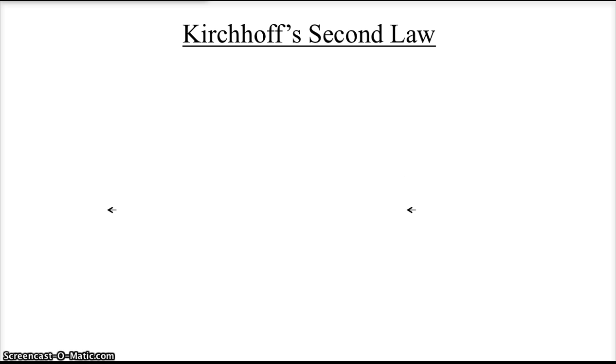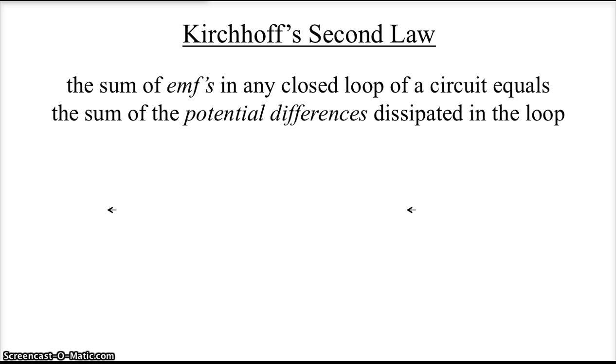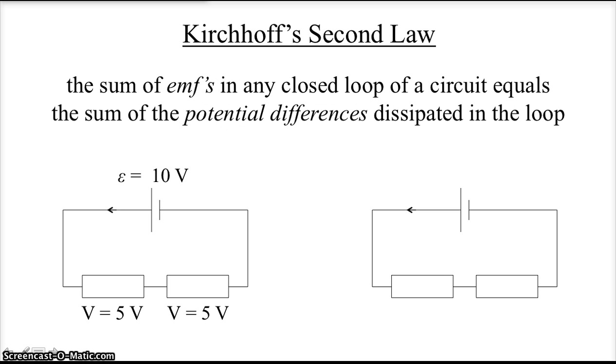Kirchhoff's second law is about potential difference. The sum of EMFs in any closed loop of a circuit equals the sum of the potential differences dissipated in that loop. Let's take a case where you've got an EMF of 10 volts. And let's say each resistor dissipates 5 volts. We're going to test out Kirchhoff's second law. If you go around this loop, follow my cursor here, the EMF supplied is 10. And the total potential difference dissipated is 5 plus 5, or 10. So in that closed loop, we follow Kirchhoff's second law. And it's true for every loop.